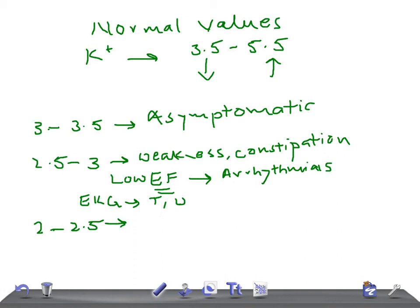The EKG changes over here will be flattened T waves, okay, the flattened T waves, right. You can see U waves, okay, and decreased ST segment, decreased ST segment, right, and wide QRS. So let me repeat: flattened T waves, U wave, decreased ST segment, and wide QRS. Okay.